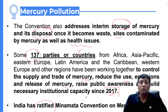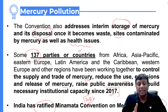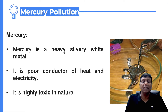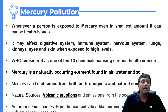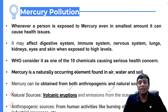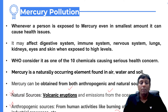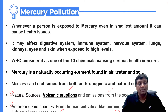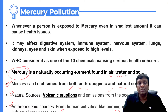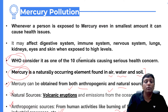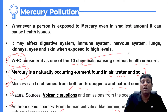India ratified the Minamata Convention from 2018 onwards, with a target year of around 2025. Mercury is a heavy silver-white metal — a poor conductor of heat and electricity and highly toxic in nature. Sources of mercury include both natural and anthropogenic: natural sources include volcanic eruptions and ocean emissions; anthropogenic sources include burning of fossil fuels like coal, mining, and industrial processes. Mercury is naturally occurring in air, water, and soil. According to WHO, mercury is one of the 10 most dangerous chemicals for human health.